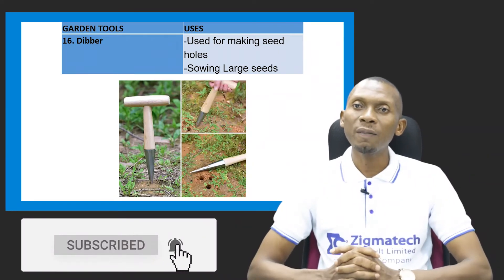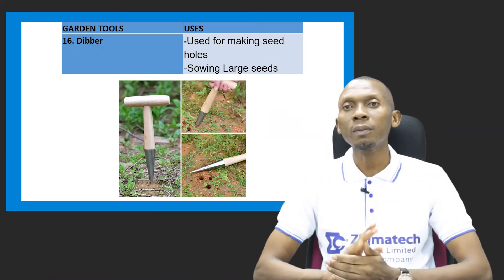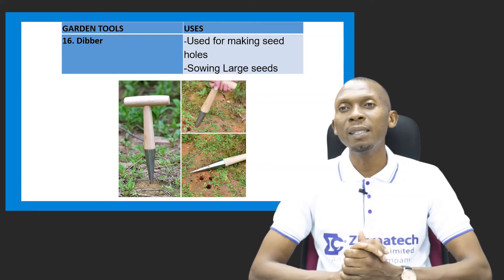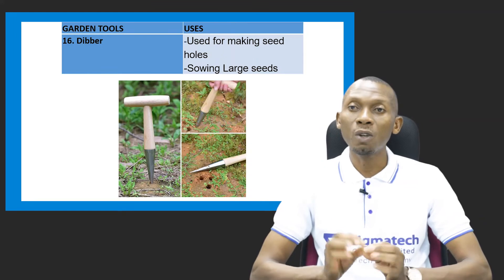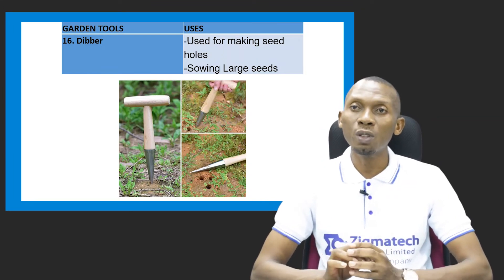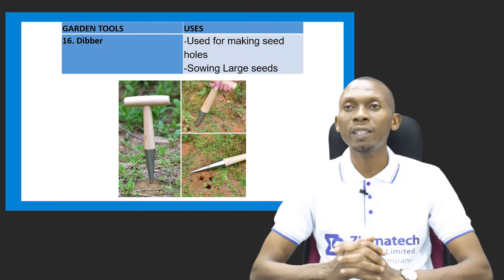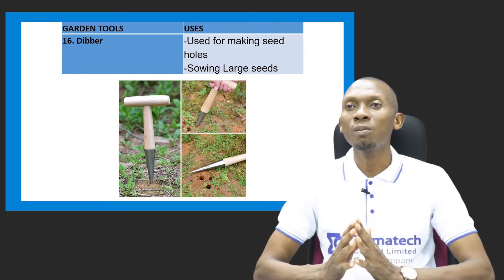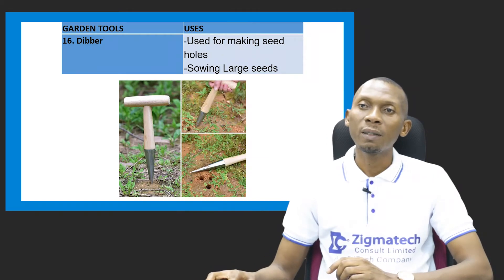We have the dibber as another garden tool. It is used for making seed holes before you plant your seeds — you need to make holes to put the seed in and cover them. It can also be used for sowing large seeds.